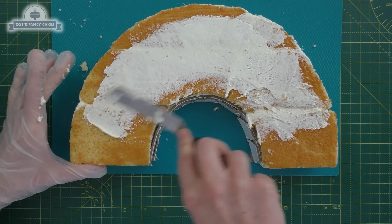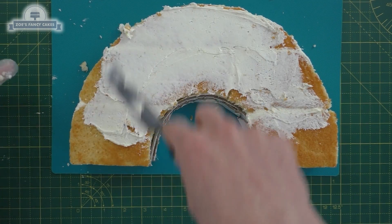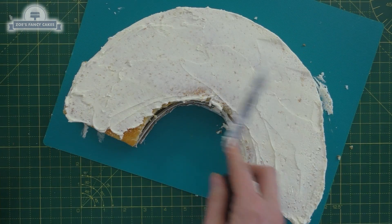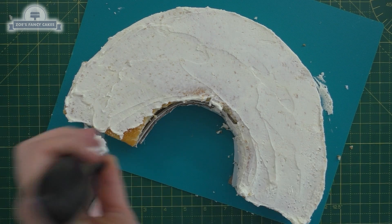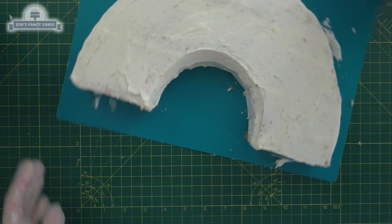I'm going to cover the whole thing in buttercream. Now usually I use ganache, but I thought it'd be nice to use buttercream this time. I would say if you're worried about your rainbow not being very sturdy when you stand it upright, then swap for ganache instead of buttercream because it will give you a firmer finish. I'm going to go all the way around in my buttercream.